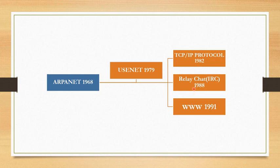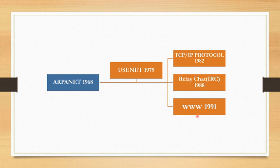Internet Relay Chat became available in 1988, which led to the formation of chatroom communities. The last and most important development, which made our life super speedy and very comfortable, was the internet as a global web of information. The World Wide Web, known as WWW, was developed by Tim Berners-Lee and Robert Cailliau in 1991 at the European Center for Nuclear Research. That is the history of the internet — how it started its journey with ARPANET and culminated in the WWW.